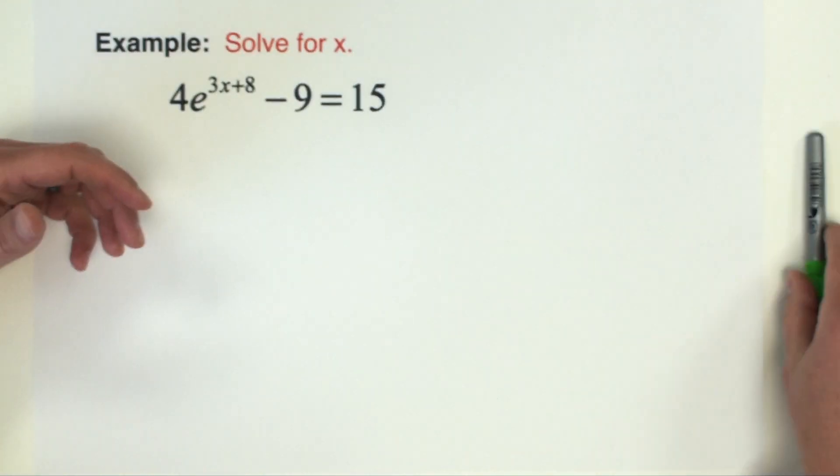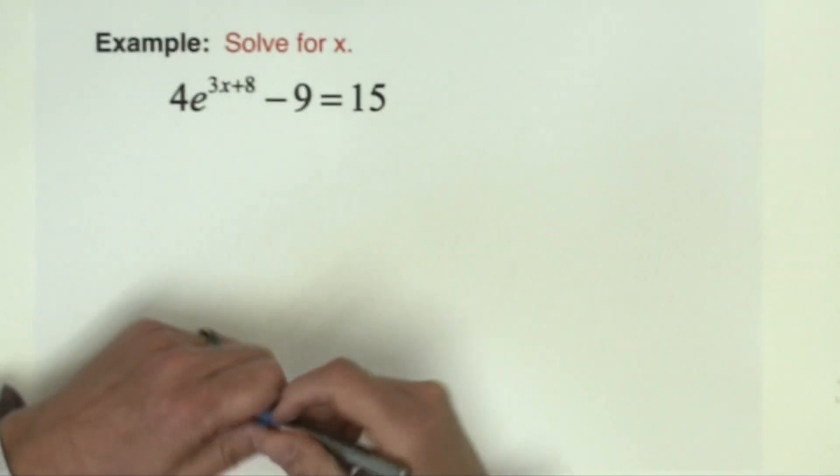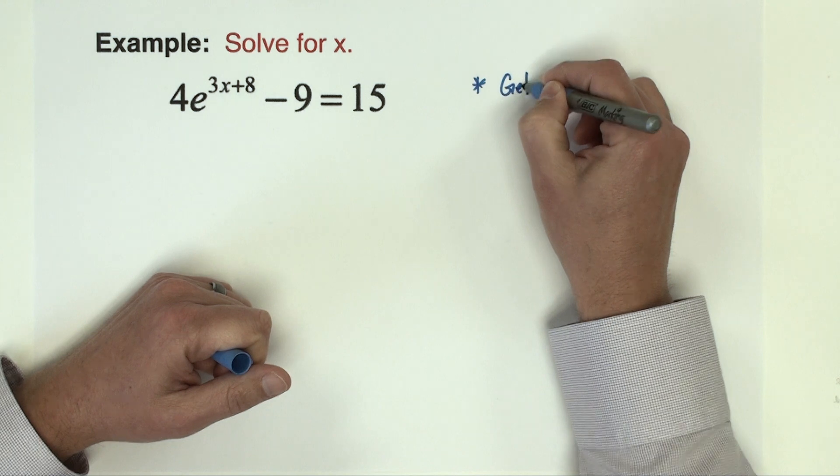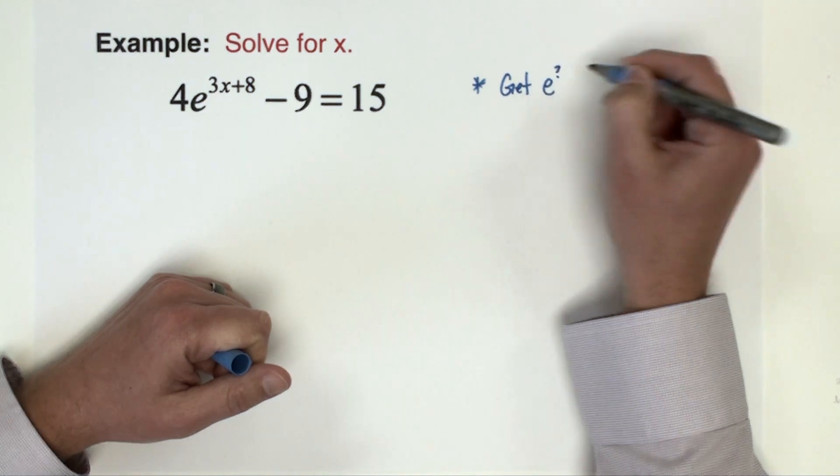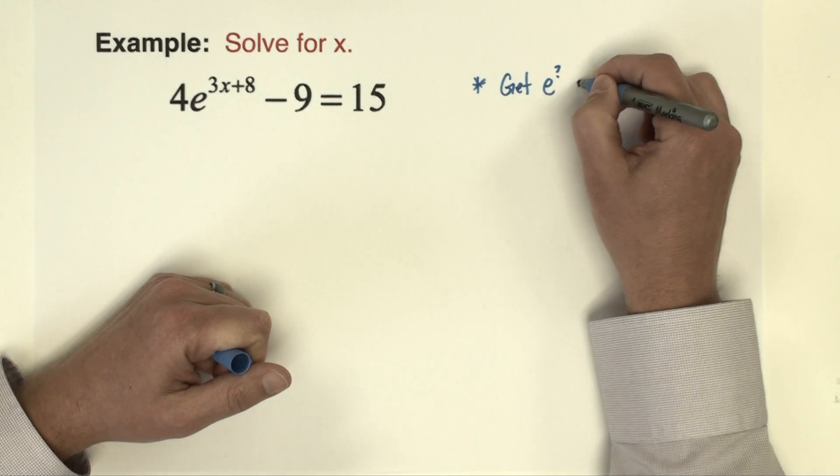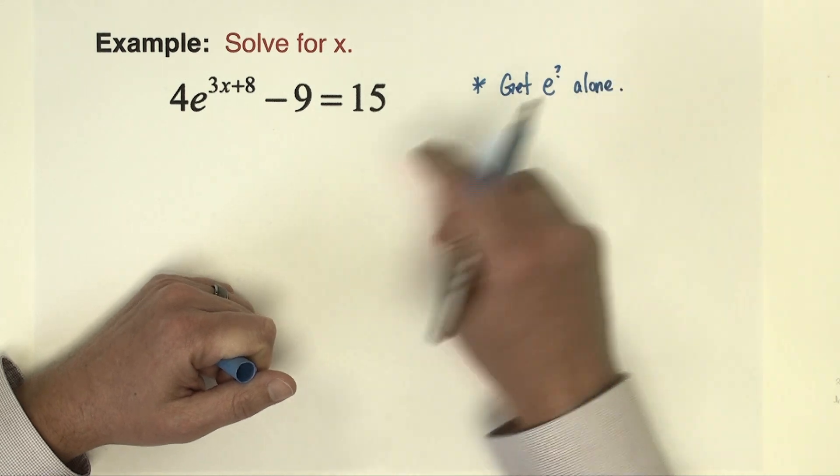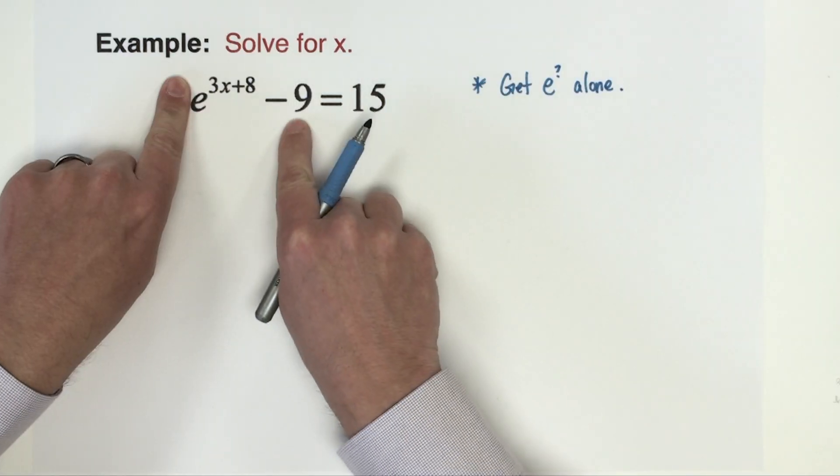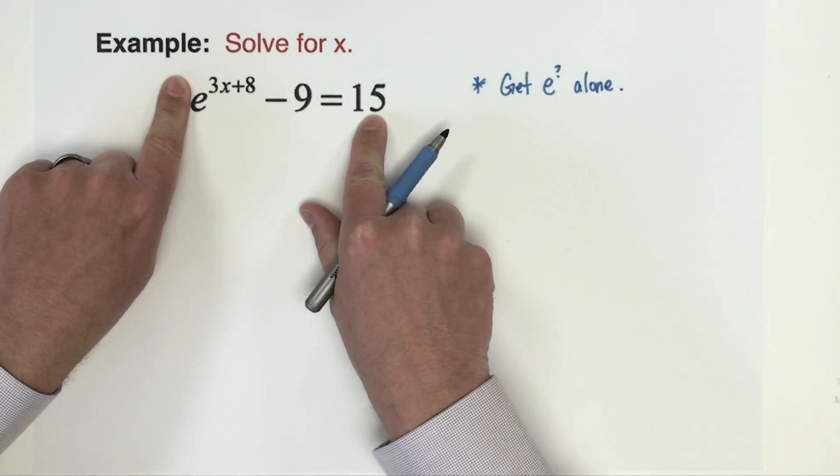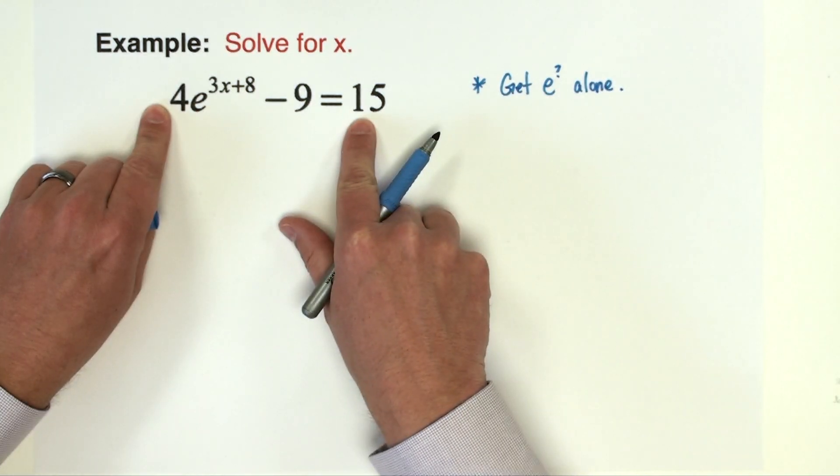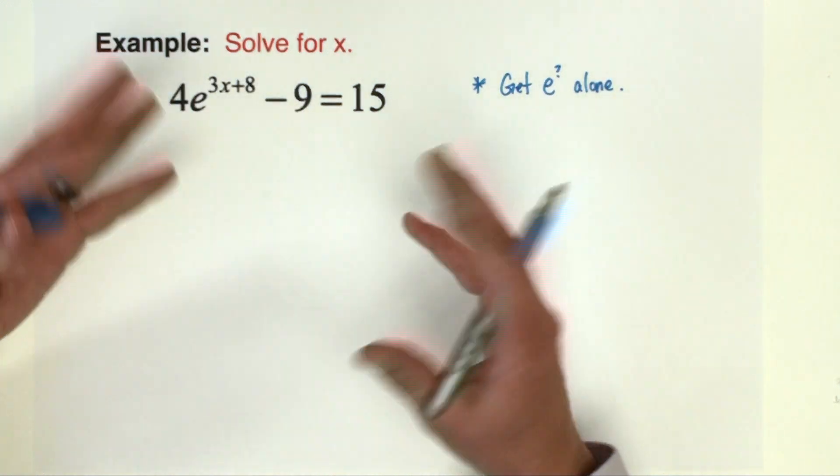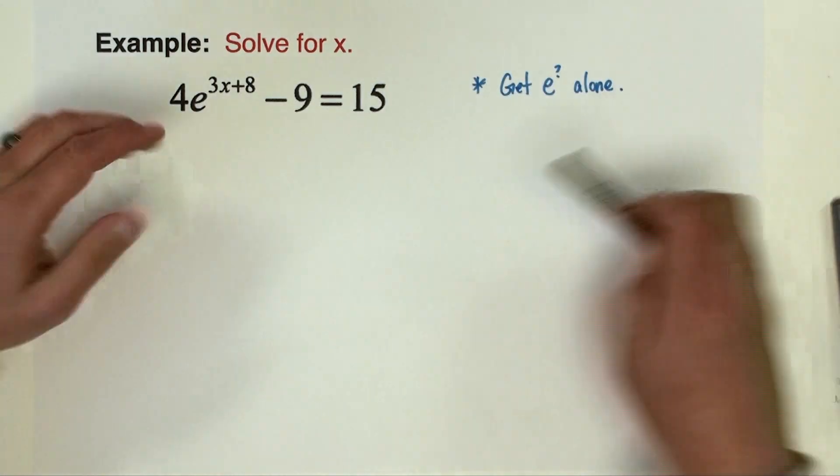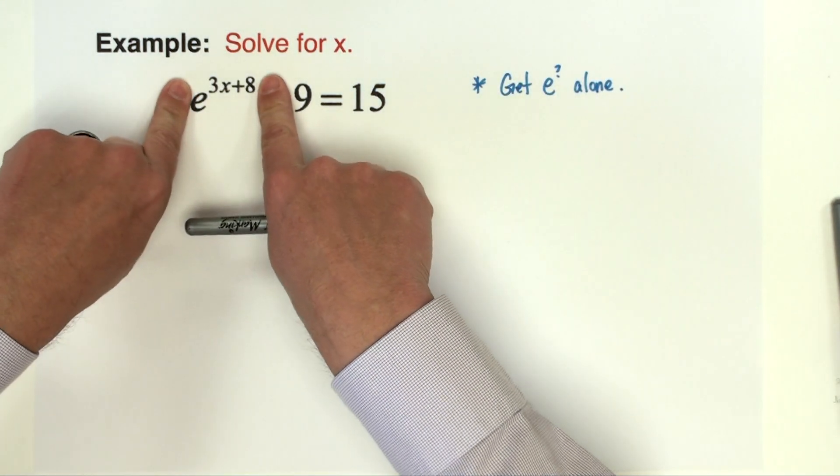To solve an equation like this, first thing that you want to do is get the e to the power alone. Okay, so you want to get this by itself. So the minus nine we've got to move it over here. The four we're going to move it over here as well. Okay, so we're just going to start this like it's any old ordinary two-step equation and we're trying to isolate part of that equation.